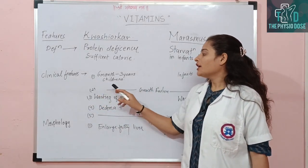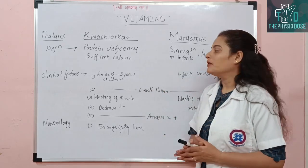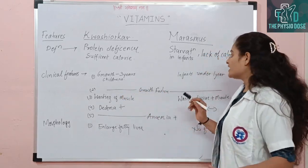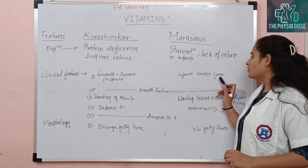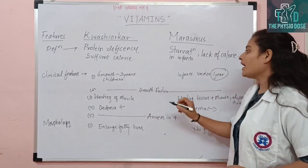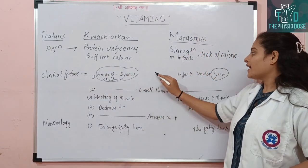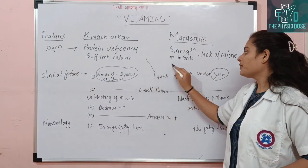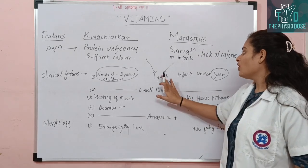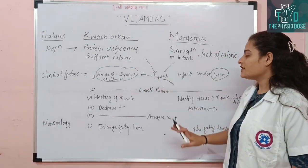Next are Clinical Features. For Kwashiorkor, the age range is six months to three years. For Marasmus, it affects infants under one year. So for a child under one year, they can have both diseases, but above one year they will have only Kwashiorkor. This is the basic difference in age.